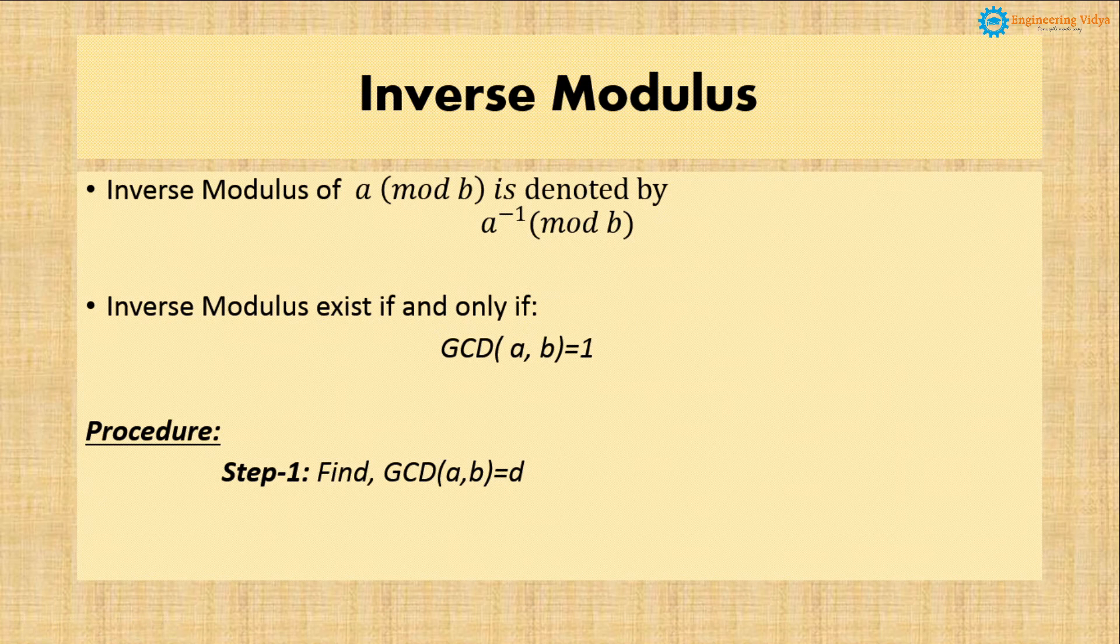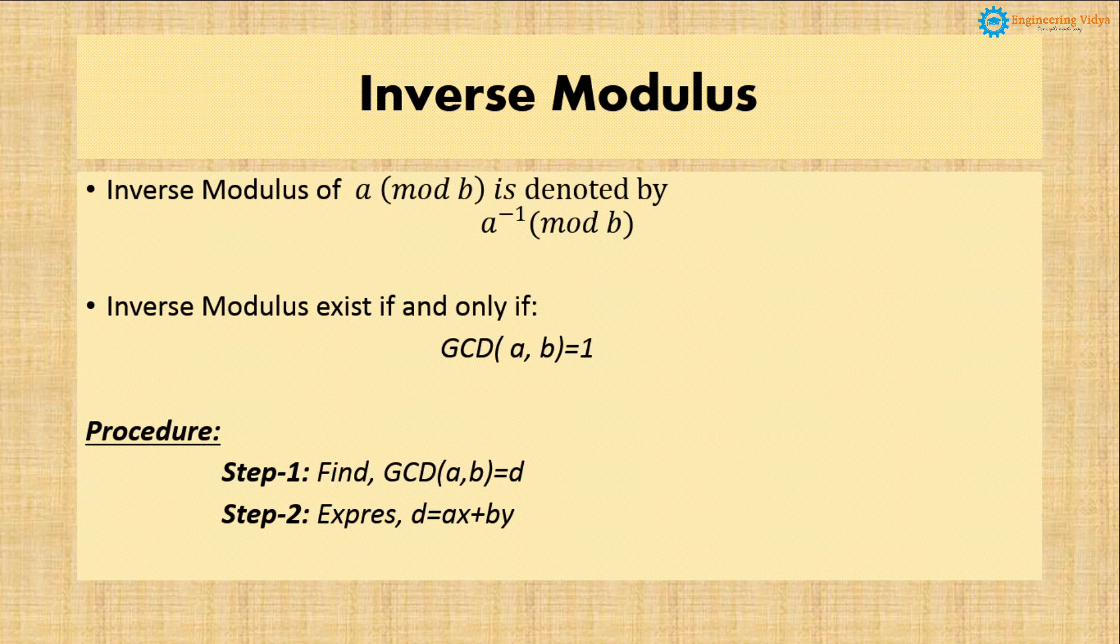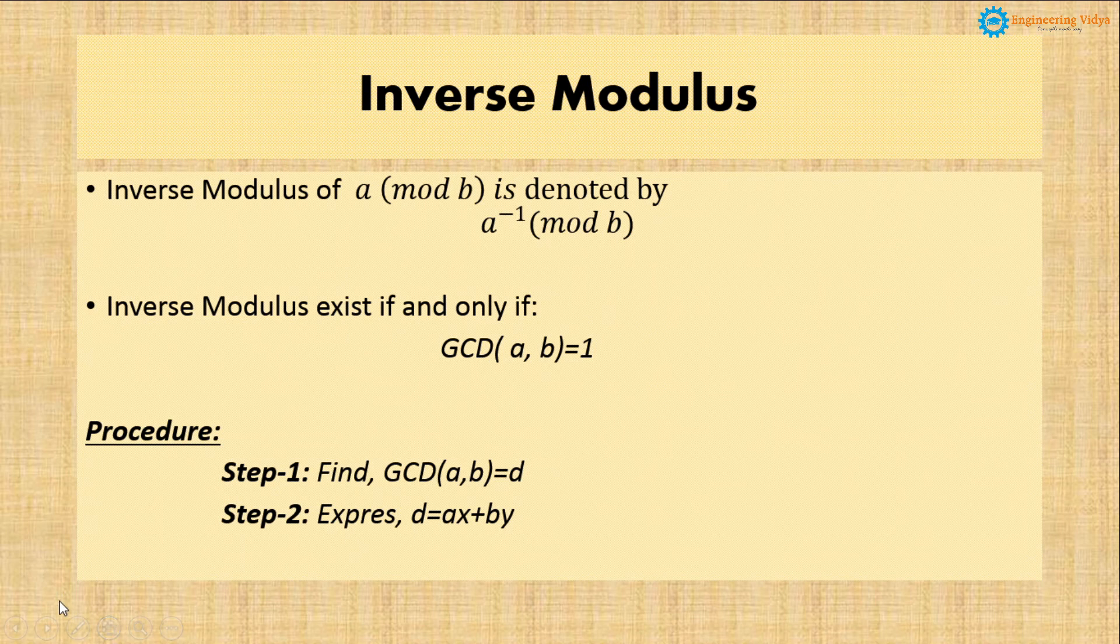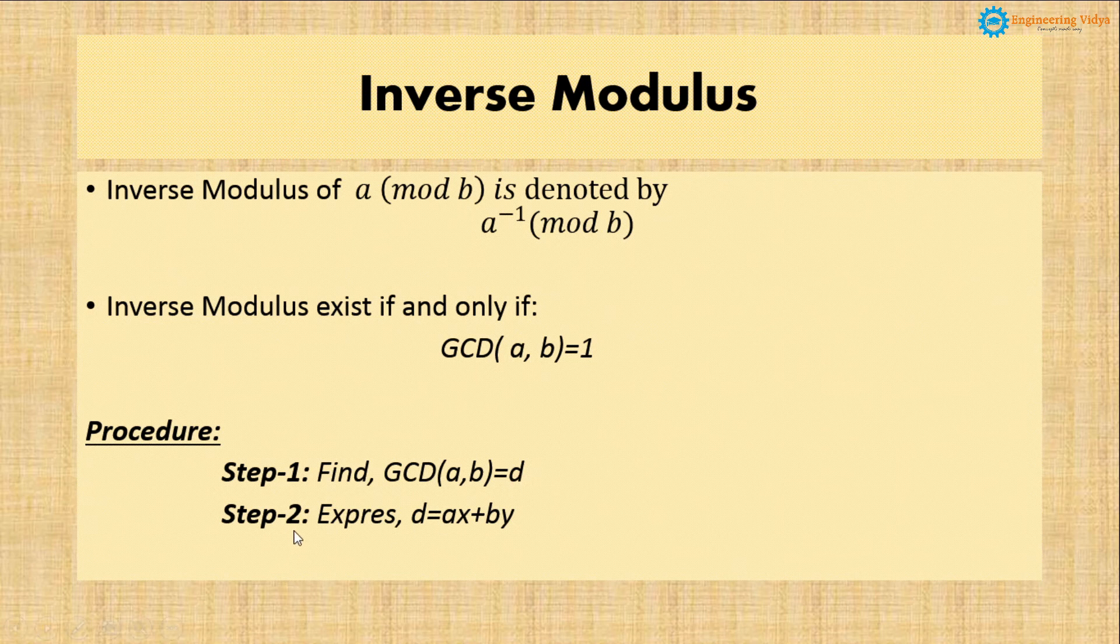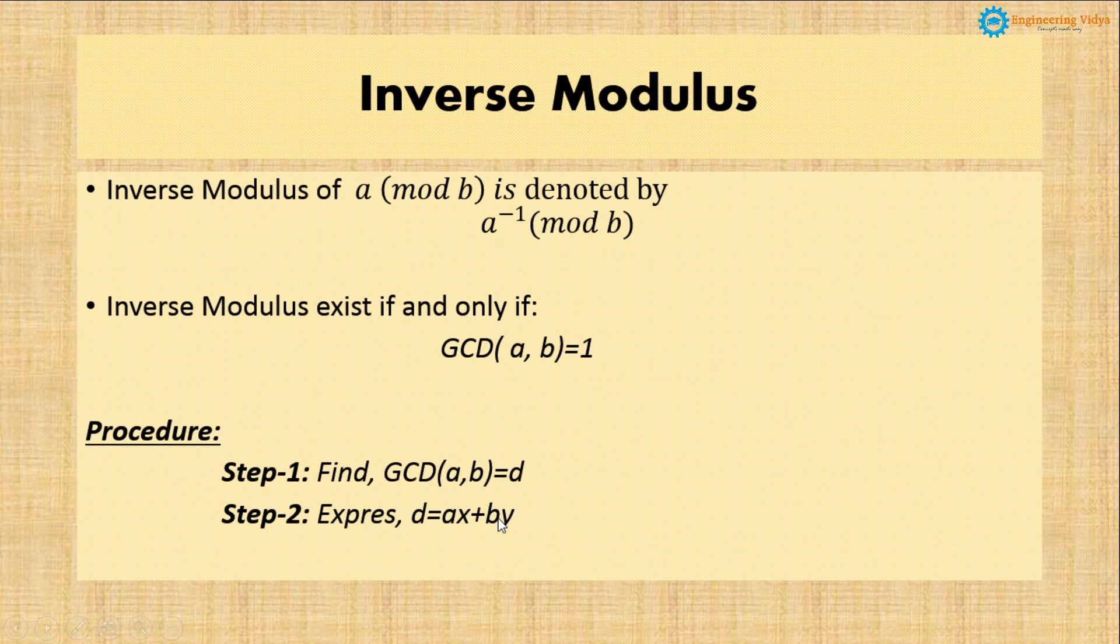Step 2: After finding the GCD of a comma b, where we have obtained d and d is nothing but GCD equal to 1, we will express d equal to ax plus by. I think you know how to express this, as we have already seen this in Diophantine equation.